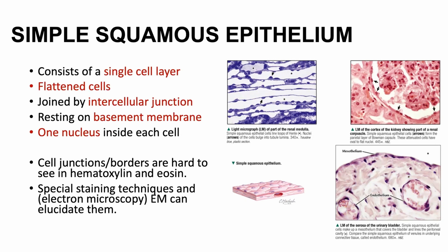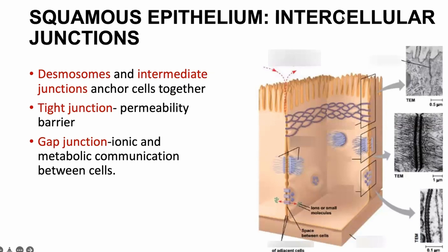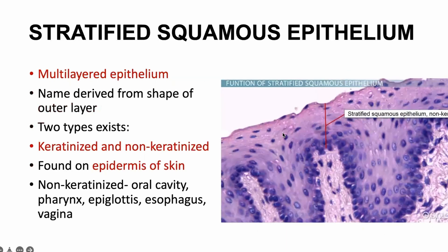Simple squamous epithelium consists of a single cell layer of flat cells, joined by intercellular junctions, resting on a basement membrane, with one nucleus. This is showing an example in the kidney — the renal tubule and blood vessels. Wherever you want absorption to take place it makes sense to have a single epithelium. In the kidney, in the renal corpuscles, you have the endothelium — blood vessels — as simple epithelium. Endothelium is a simple squamous epithelium.